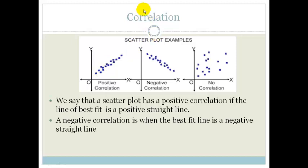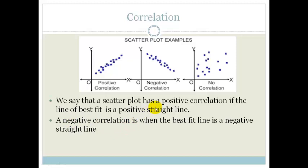If the best fit line is a negative straight line graph, we say that it has got a negative correlation. And if there is no correlation, it looks like someone just randomly dotted things down on the piece of paper, then there is no correlation.